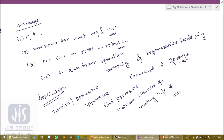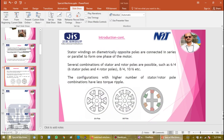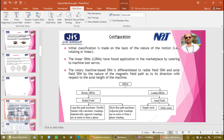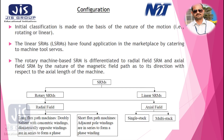The typical classifications of SRM include rotary SRMs and linear SRMs, with subtypes such as radial field, axial field, single stack, and multi stack. Linear SRM finds its application in areas like machine tool servers. This covers the topic of switch reluctance motor.